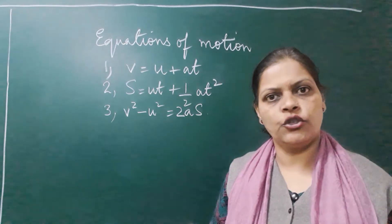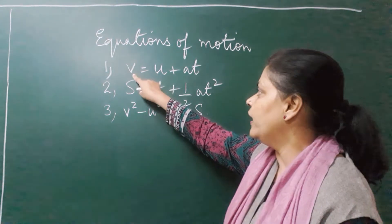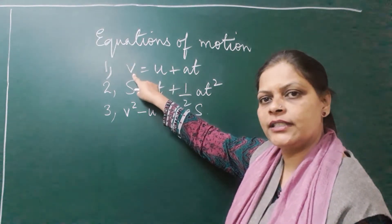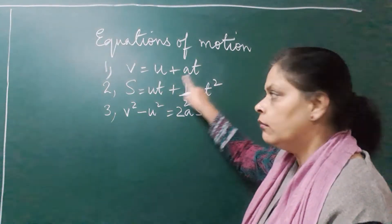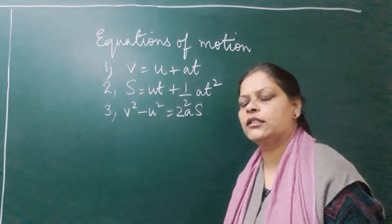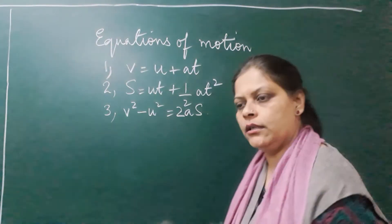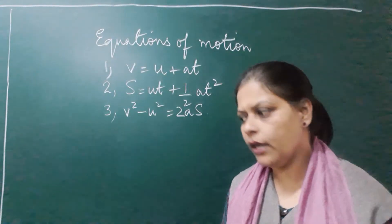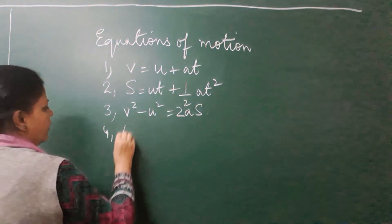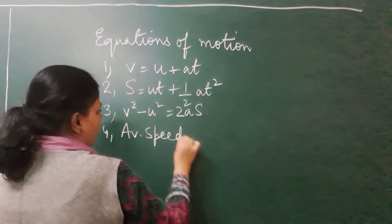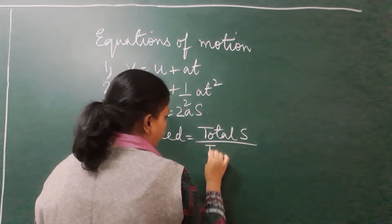U stands for initial velocity or initial speed. V stands for final velocity or final speed. A stands for acceleration. T stands for time. And capital S stands for distance travelled or displacement. We will also be using one more formula: average speed = total distance travelled upon total time taken.